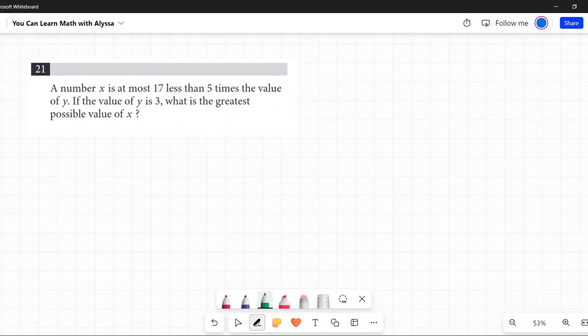A number X is at most 17 less than five times the value of Y. The value of Y is three. What is the greatest possible value of X?